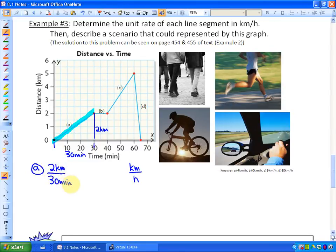So proportionally we know that there's 60 minutes in an hour. We could just times this by two and you would have four kilometers in 60 minutes, which is exactly the same as four kilometers per hour.